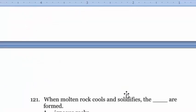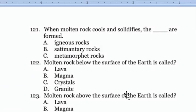Question 129: Molten rock below the surface of the Earth is called magma, option B.